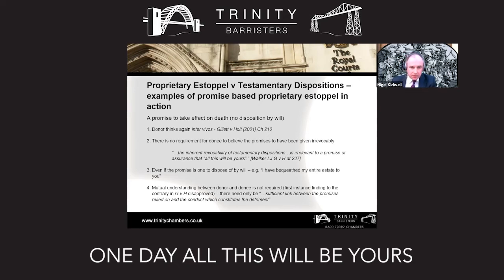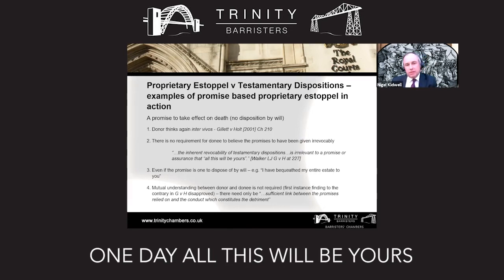Taking Gillett v Holt as an example: Mr Gillett met Mr Holt when he was only 12 years old. He started working for him from the age of about 15 on his farm. He made a number of sacrifices — he didn't go to agricultural college so he could work for him, he worked for low wages for a long period of time — and he received a lot of assurances. At one stage, Mr Holt wanted to adopt him; at another stage, he tried to get Mr Gillett onto the farm tenancy as a joint tenant.